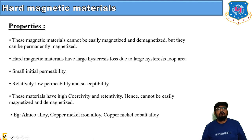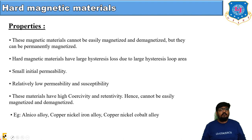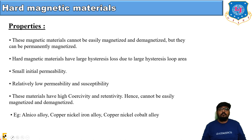Hard magnetic materials cannot be easily magnetized and demagnetized, but they can be made permanently magnetized. They have large hysteresis loss due to a large hysteresis loop area, small initial permeability, and relatively low permeability and susceptibility. These materials have high coercivity and retentivity, hence cannot be easily magnetized and demagnetized. Examples include alnico alloy, copper-nickel-iron alloy, and copper-nickel-cobalt alloy.